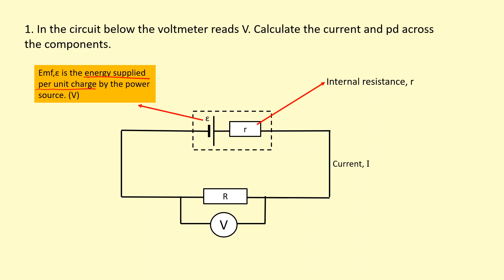It's important to distinguish the EMF from what the voltmeter is going to read — they're not going to be the same. That's because some of the energy being supplied by the cell is going to get lost inside the cell itself, due to the internal resistance. And that's what we call the lost PD.